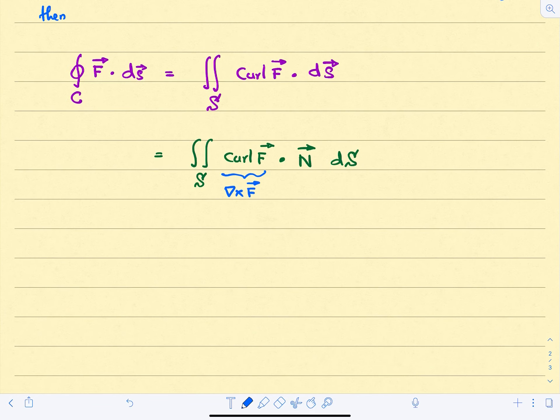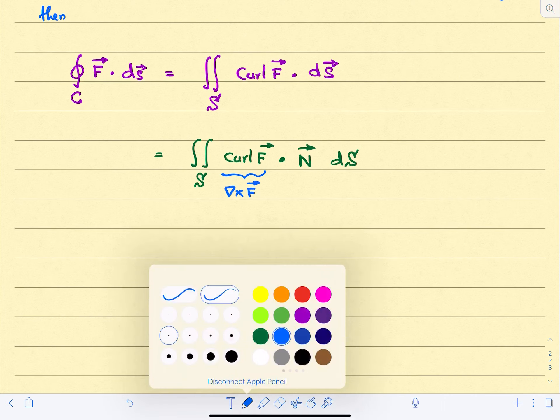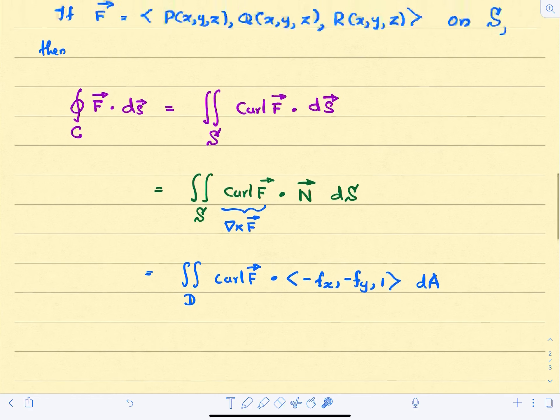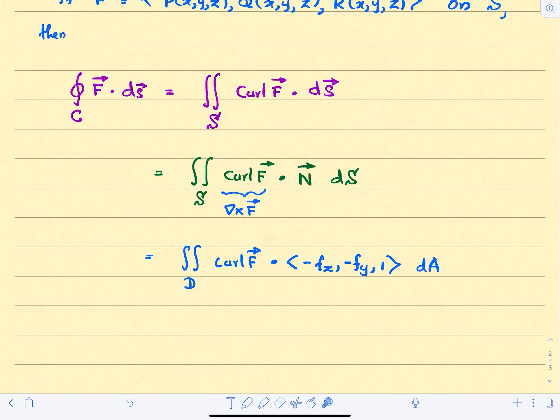And if you want, we can further simplify this flux integral. We can define this flux integral over the domain D. So you will get curl of F dot, this should be minus F sub x, minus F sub y, and 1, dA. And we know how to derive this formula from the previous section. Basically this N dS can be simplified to the vector minus F sub x comma minus F sub y comma 1 dA over the domain D. So using this we can calculate a line integral over a boundary of a surface.